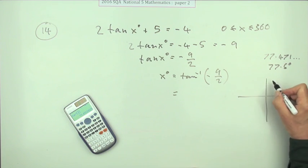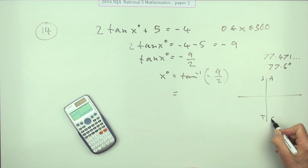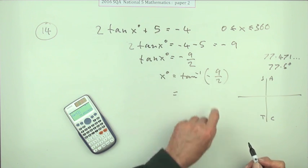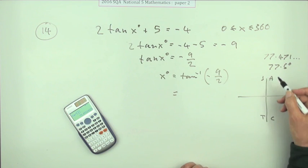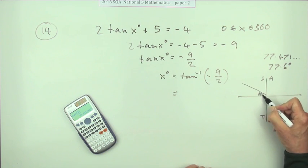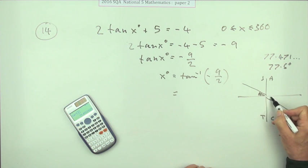All sine tan cos negative - tan means you're either going to be in this second quadrant or in this fourth quadrant. So that angle should either sit here or it should sit here.